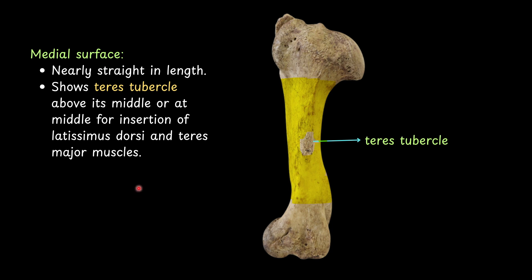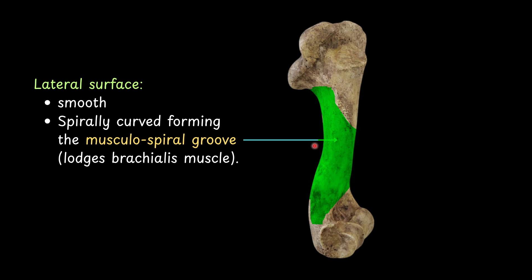The medial surface is nearly straight in length and shows the teres tubercle above its middle, for the insertion of the latissimus dorsi muscle and teres major muscle. The lateral surface is smooth and spirally curved, forming the musculospiral groove, which lodges the brachialis muscle.